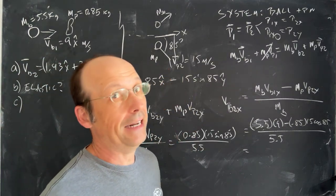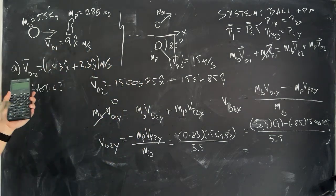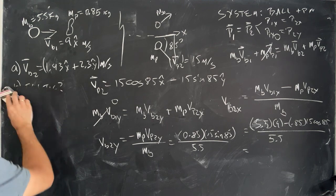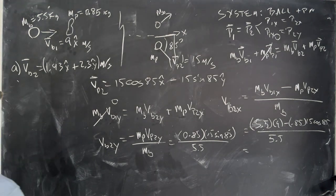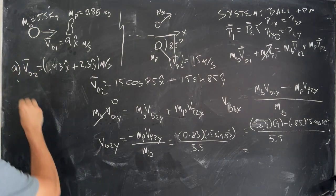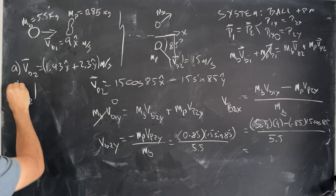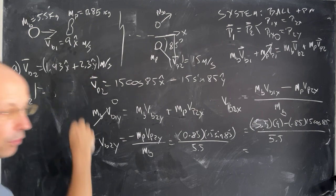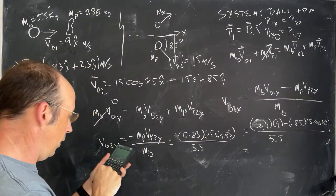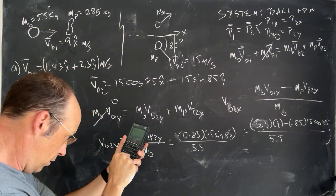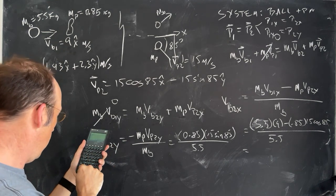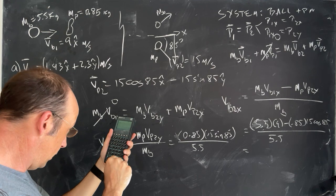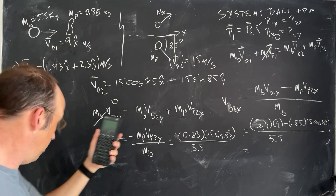The question asks for magnitude and direction. I'll find the magnitude — we need it anyway. vB2 magnitude is just the square root of 1.43 squared plus 2.3 squared. I get 2.72 meters per second.